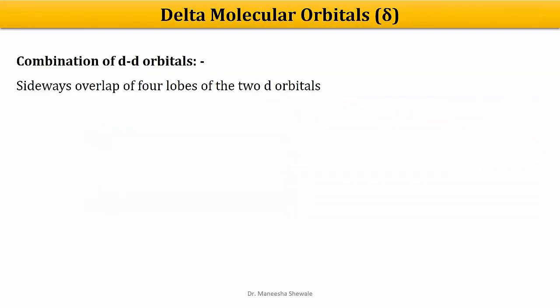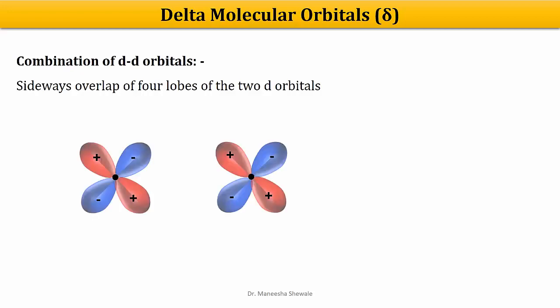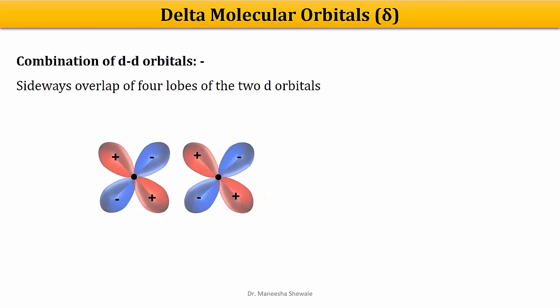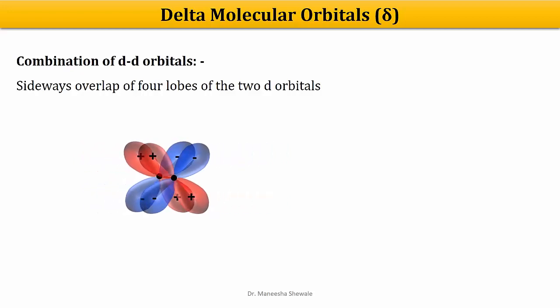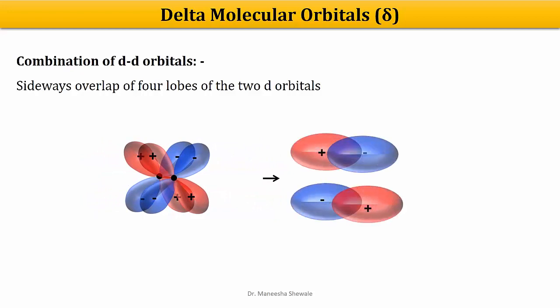The next type is the delta molecular orbital. Delta molecular orbitals are formed when two D orbitals combine. There is a sideways overlap of the two D orbitals such that the four lobes overlap, resulting in the formation of a delta bonding molecular orbital.